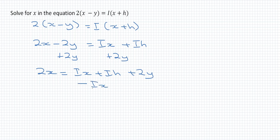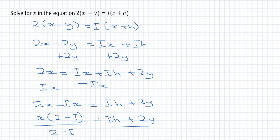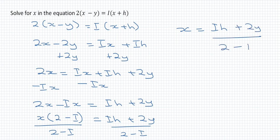We subtract IX from both sides, giving us 2X minus IX equal to IH plus 2Y. Now we factor out X on the left-hand side, giving us X times the quantity 2 minus I, equal to IH plus 2Y. We then divide both sides by 2 minus I, the coefficient of X. Therefore, X equals IH plus 2Y divided by 2 minus I.